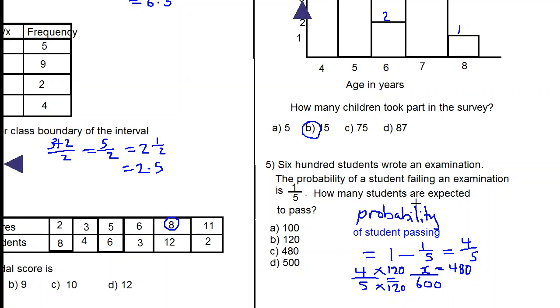The number of students that are expected to pass is 480, which is C. So these are our answers, and all the best to you in your studies.